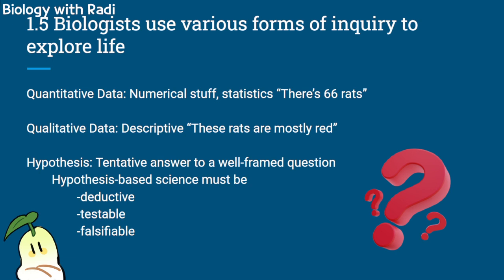Biologists use various forms of inquiry to explore life. There are two types of data in the scientific method. Quantitative data is numerical — things like statistics or the statement 'there are 66 rats.' Qualitative data is descriptive — something like 'these rats are mostly red.'